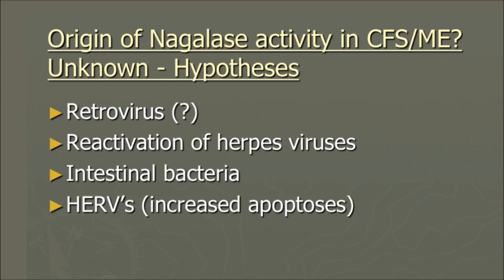The origin of nagelase activity in ME-CFS is unknown at this moment. There are several hypotheses: viruses, retroviruses, reactivation of herpes viruses, intestinal bacteria, and increased apoptosis with HERVs — endogenous retroviruses — that could also play a role in initiating more nagelase activity.